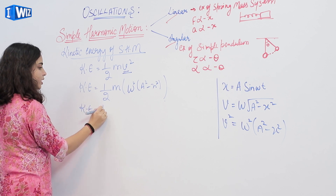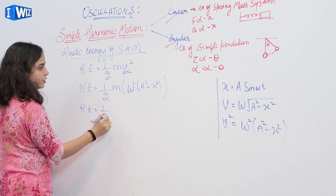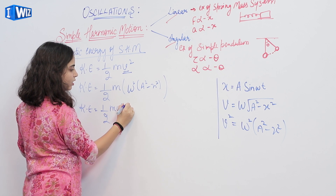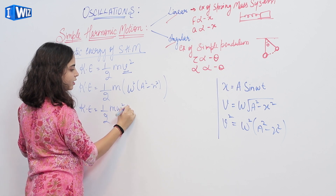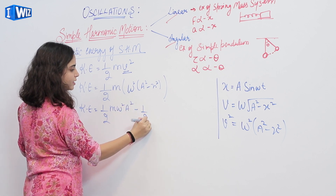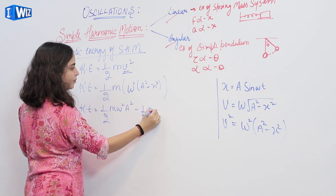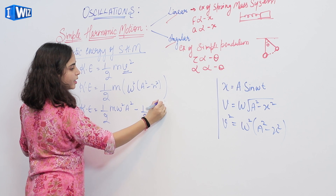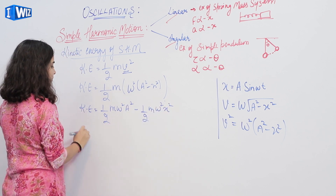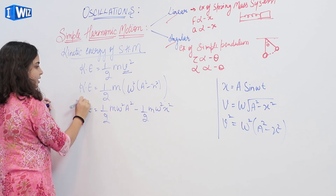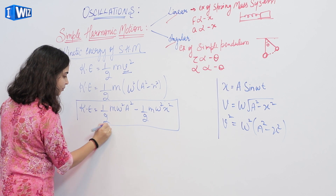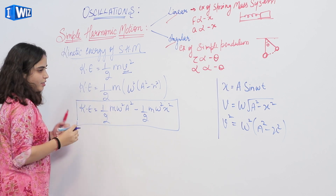Solving this further, we will get half m omega squared a squared minus half m omega squared x squared. This is the kinetic energy of a simple harmonic system.